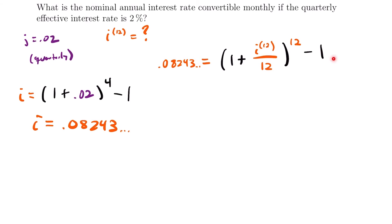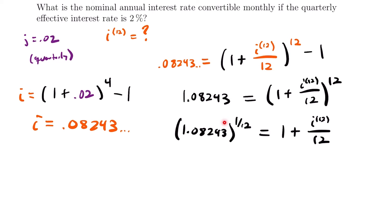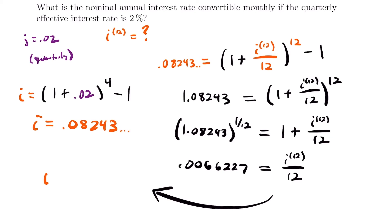Solving for the nominal annual rate: add 1 to both sides to get 1.08243 equals (1 plus nominal rate / 12) to the 12th power. Taking the 12th root of both sides gives 1.08243 to the 1/12 power equals 1 plus nominal rate divided by 12. Taking this to the 1/12 power and subtracting 1 gives 0.0066227 equals the nominal rate divided by 12. Multiplying both sides by 12, the nominal annual rate convertible monthly equals 0.07947.